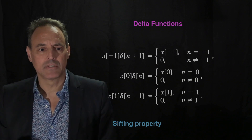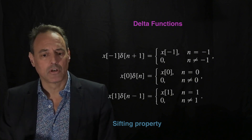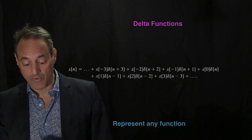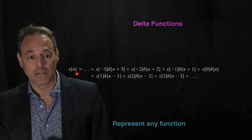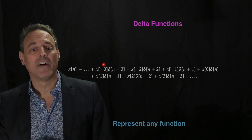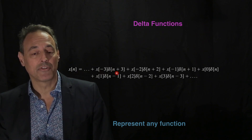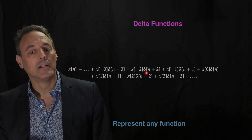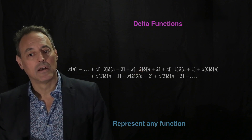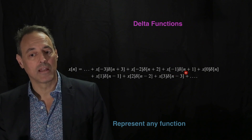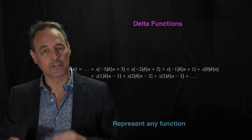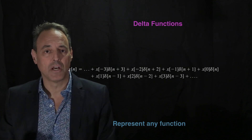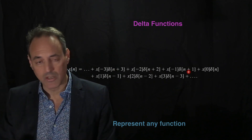The nice thing about having a linear system is that with this delta function construct, I can actually represent any signal as a series — a sum — of delta functions. For instance, a discrete signal x(n) can be represented as simply the value at each position times the corresponding delta function. At n equals minus three, it sifts out x(−3); I add to it x(−2) times delta(n+2); and at x(−1) and so forth. These delta functions progressively sift out the value of x and represent it as a sum of shifted delta functions.